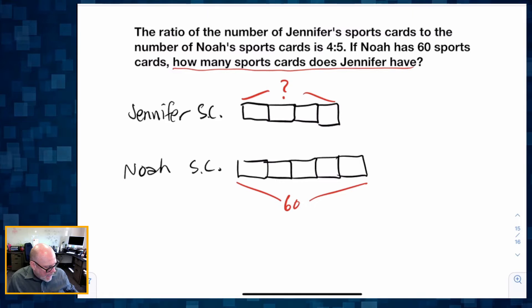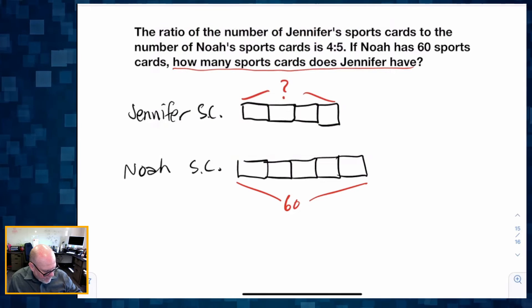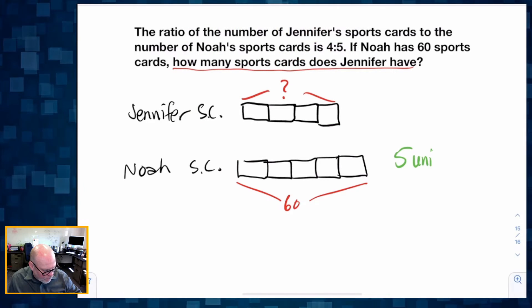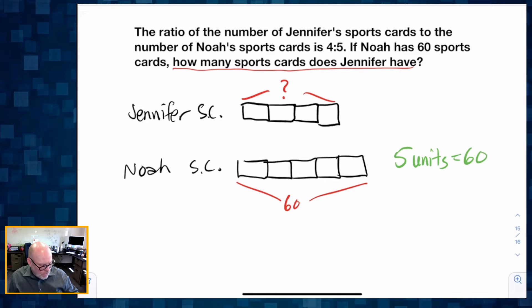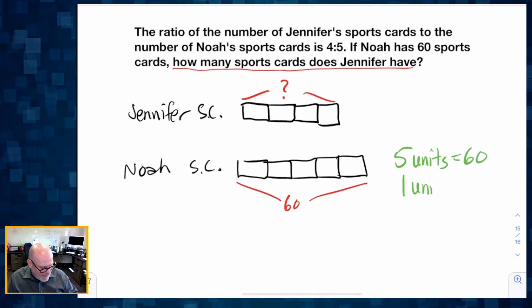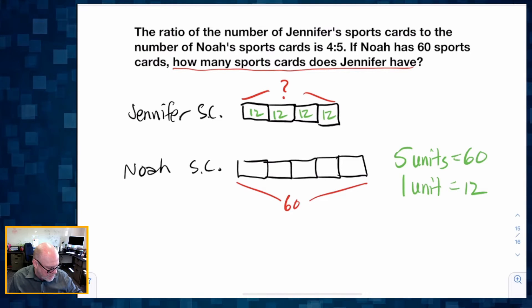We can now look at our picture and we can see that these five units represent 60 sports cards. So using a little bit of division, I can see that one unit is equal to 12 sports cards. That means each of these little units represents 12 sports cards.